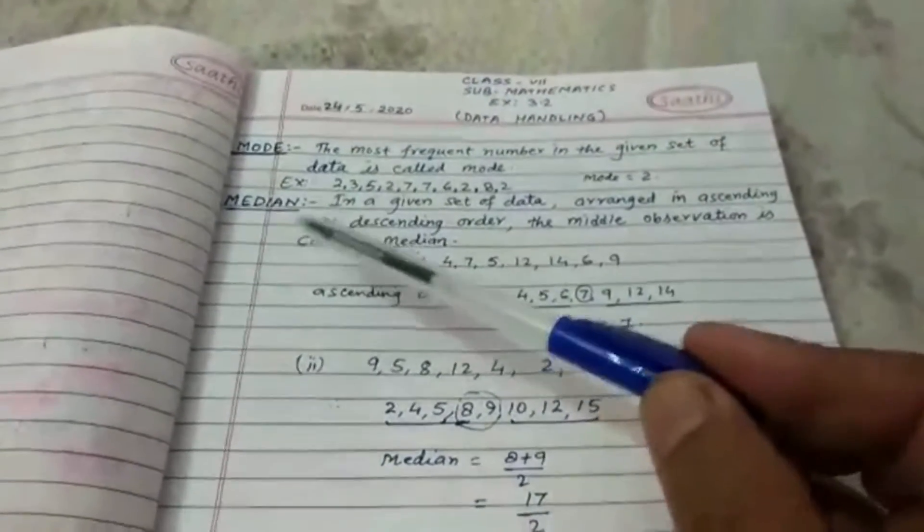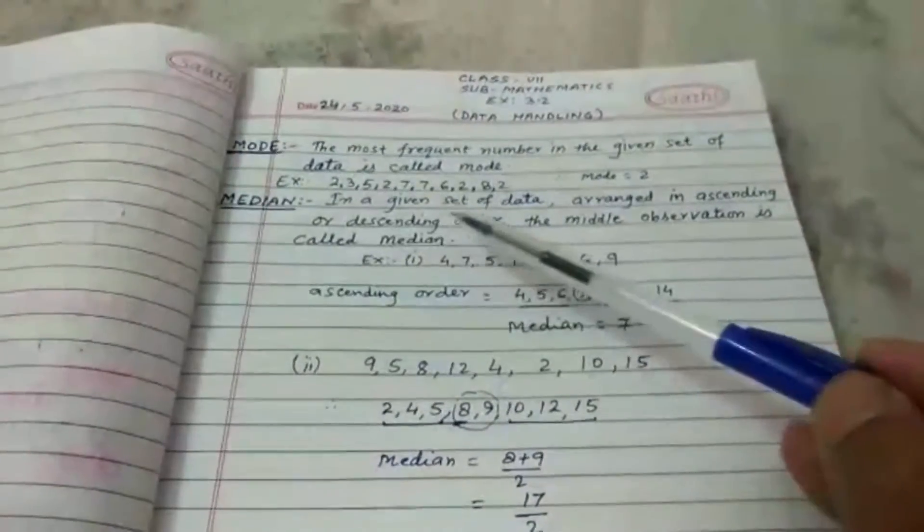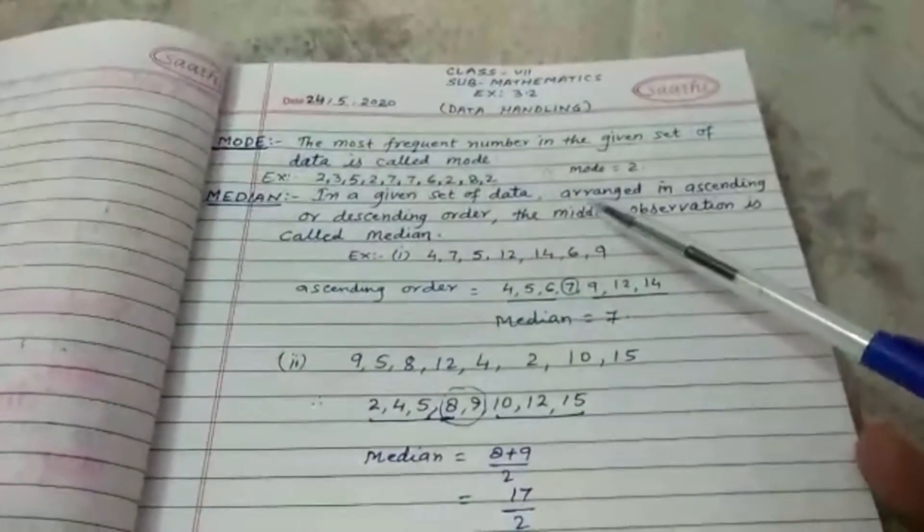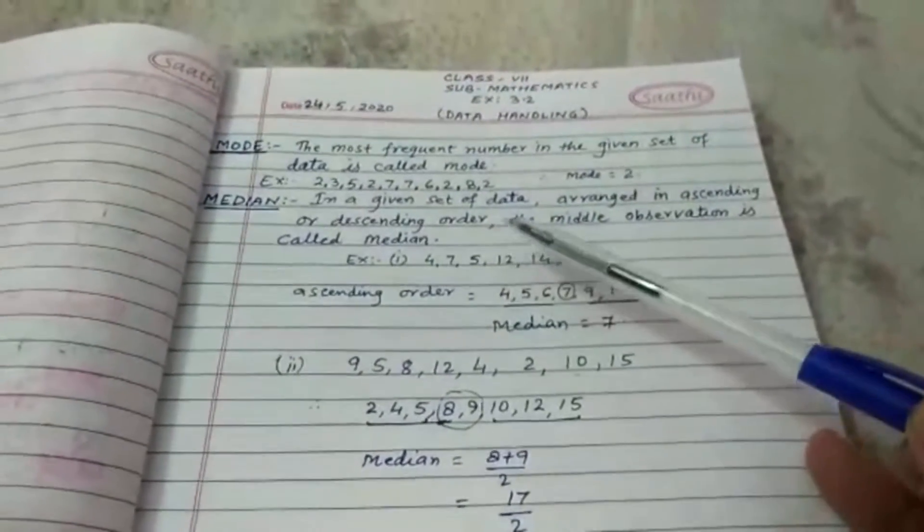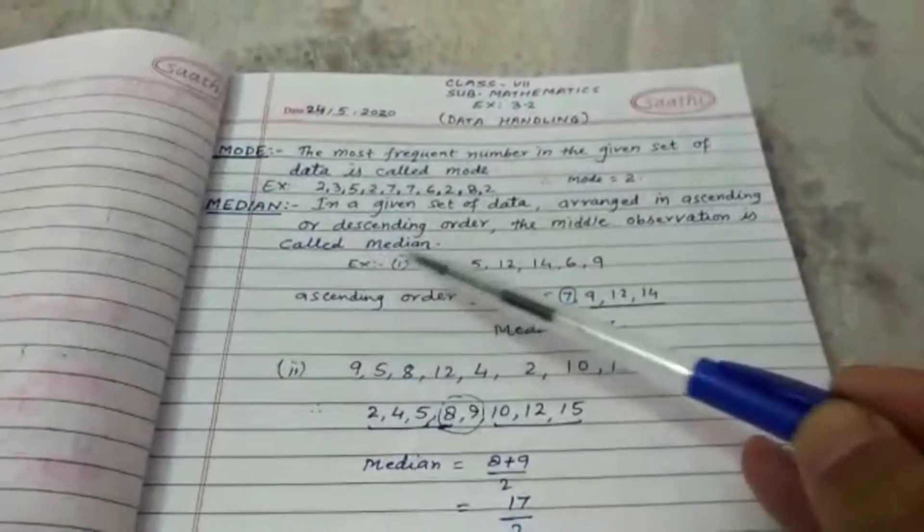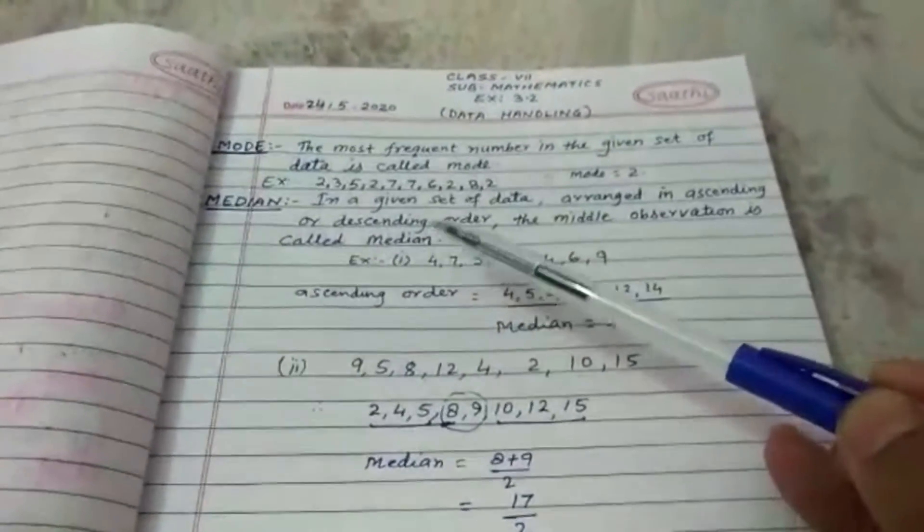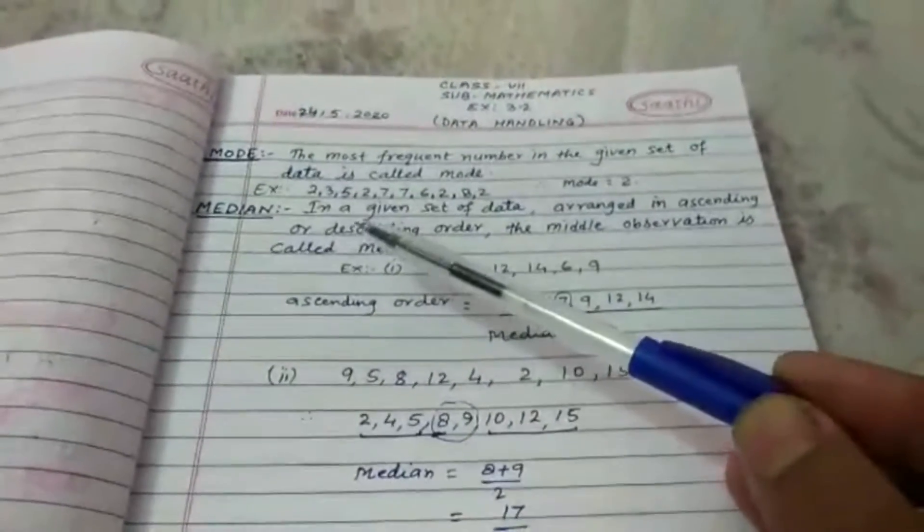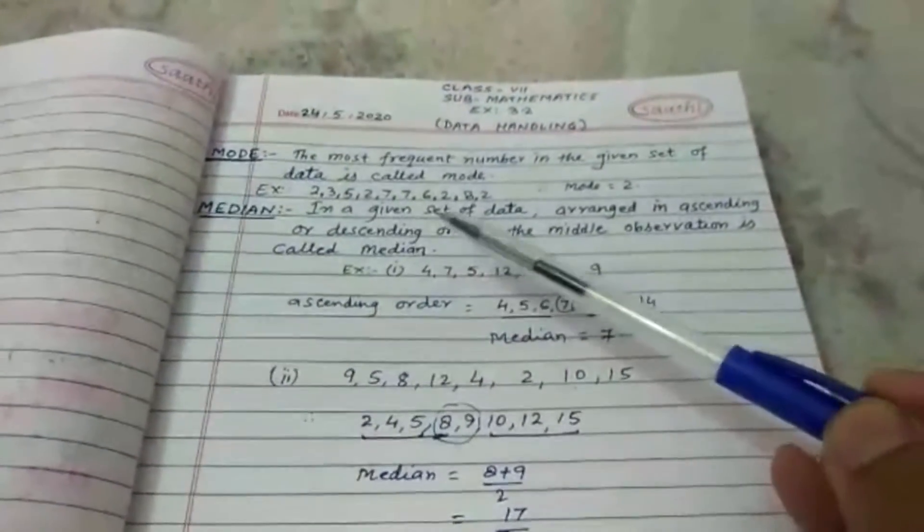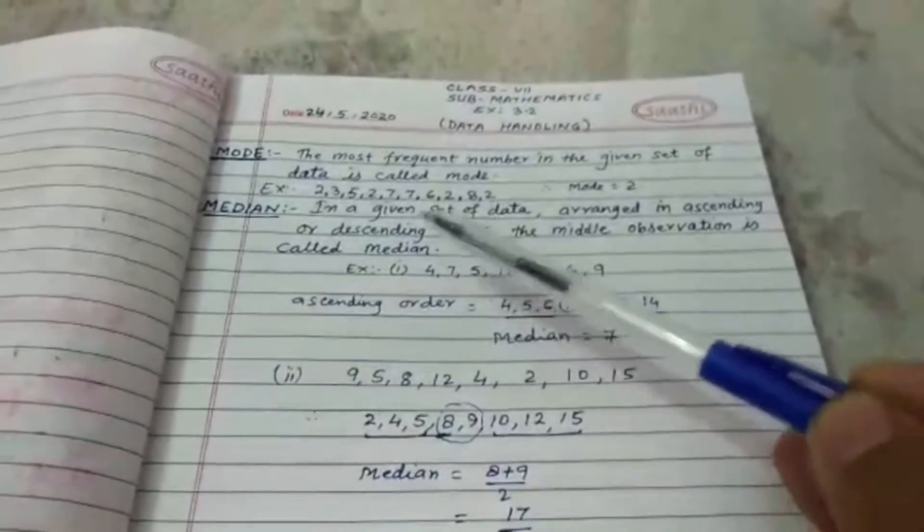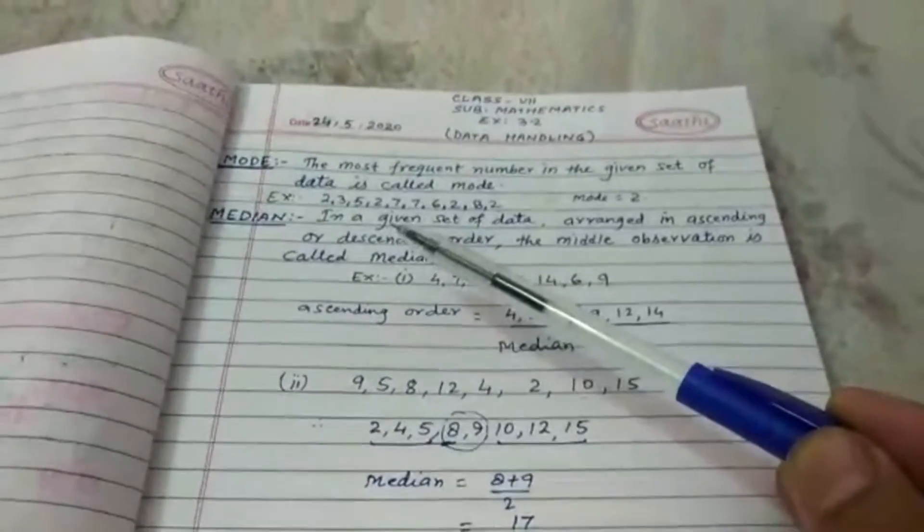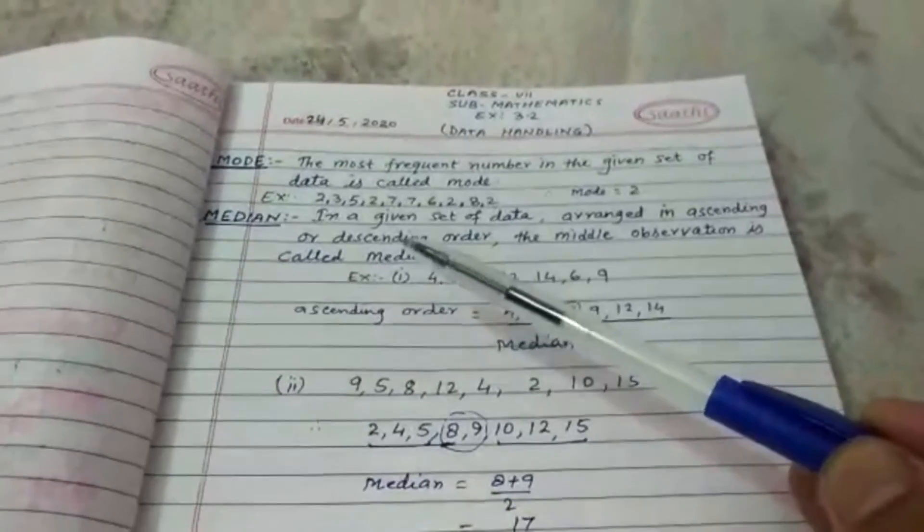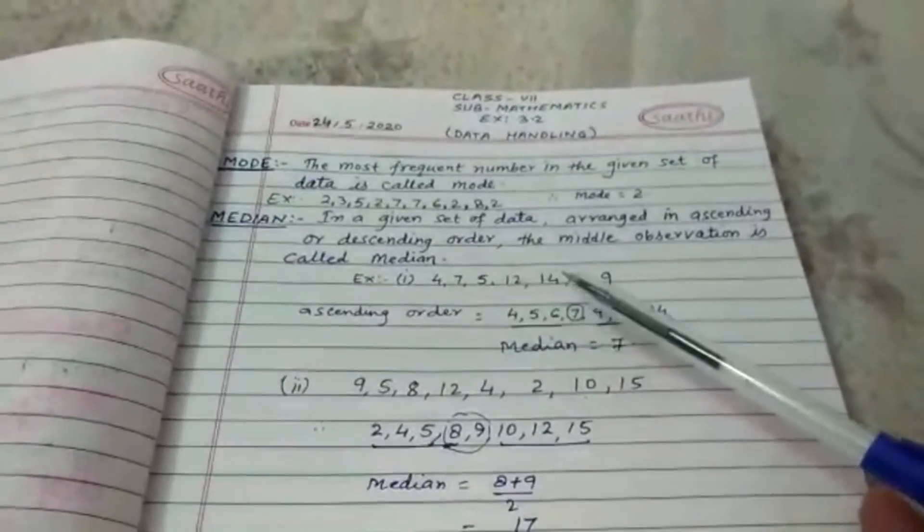Now the second is median. In a given set of data arranged in ascending or descending order, the middle observation is called median. It means in any given observation or given set of data, you have to arrange the data in ascending or descending order.